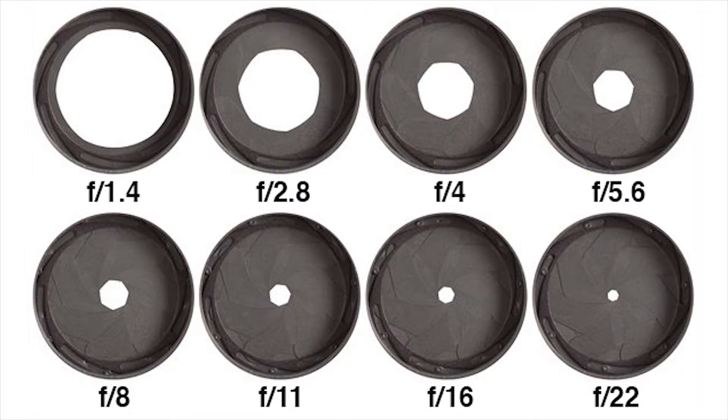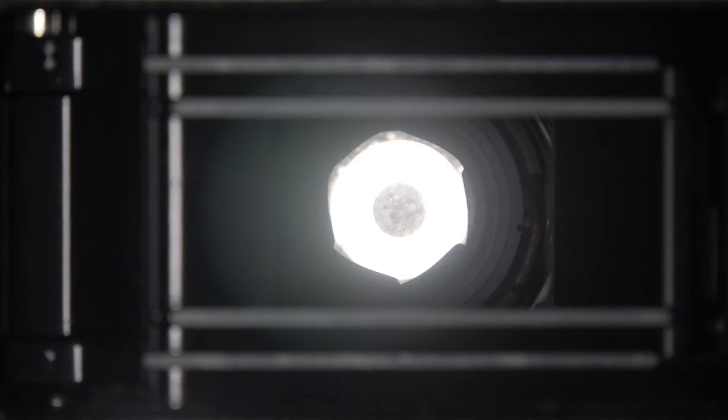Common aperture numbers range from 1.4 to 22. The circular gate called the iris is located in the camera lens. This means when you change the lens, you often change the available apertures.